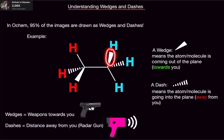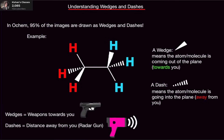Wedges are these solid brick-looking things, and the dashes are the dashy-looking things. A wedge means that whenever an atom or molecule is connected to a wedge — like this hydrogen is connected to a wedge — it means that the molecule or atom is coming out of the plane, or towards you. Think about those children's pop-up books. You open them and an image pops out at you. That's like a wedge — it's coming at you. A dash is literally the opposite. It means that any atom or molecule connected to a dash is going into the plane, or away from you.